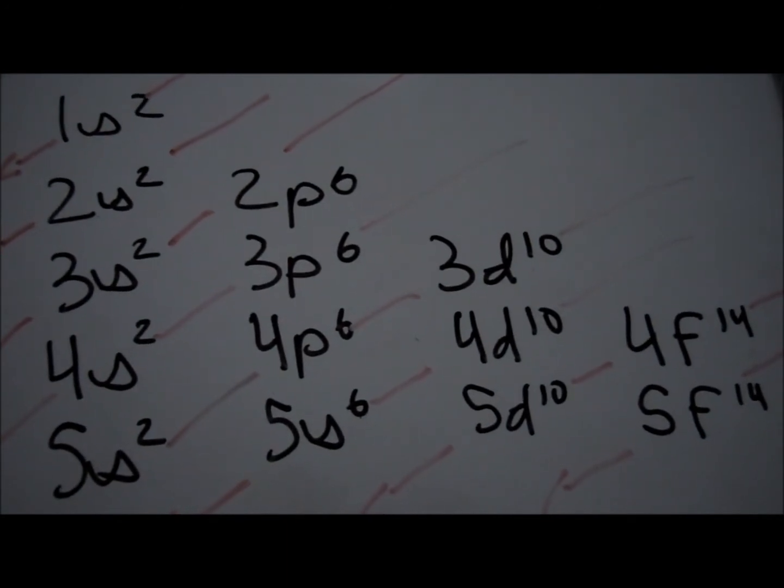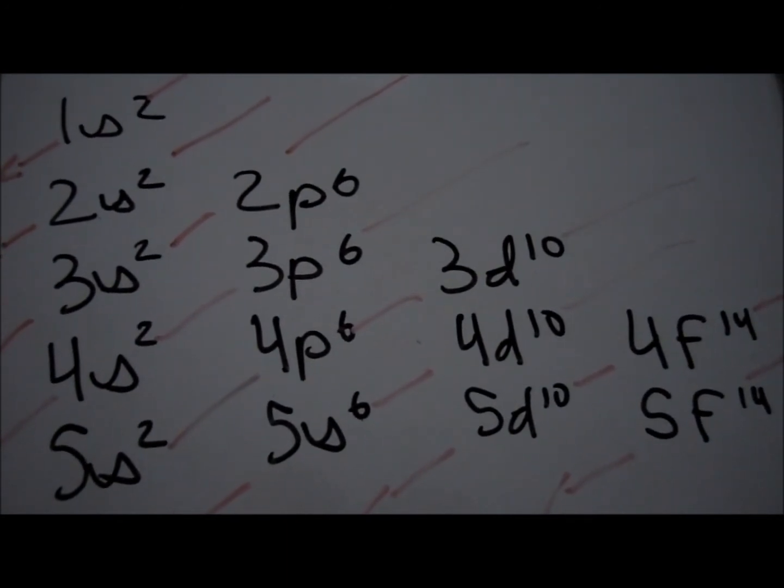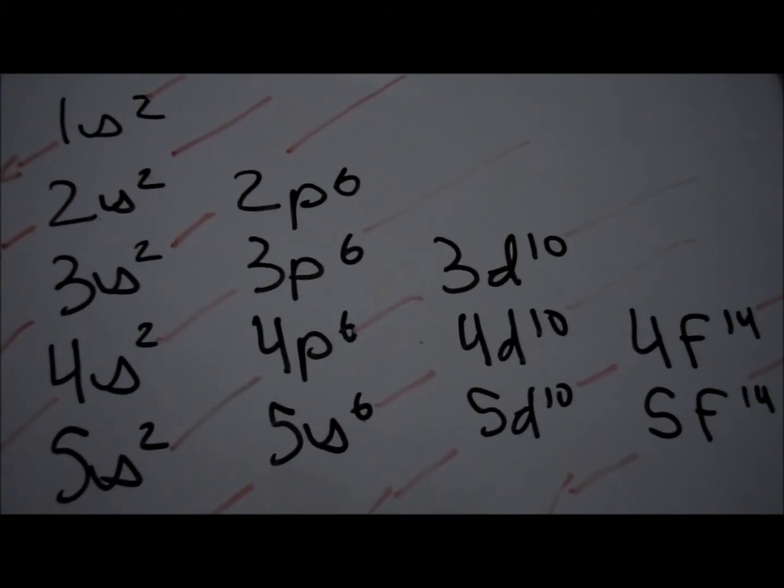The diagonal rule is the rule used to determine what to write. Write the orbitals in order: s, p, d, then f, like this.